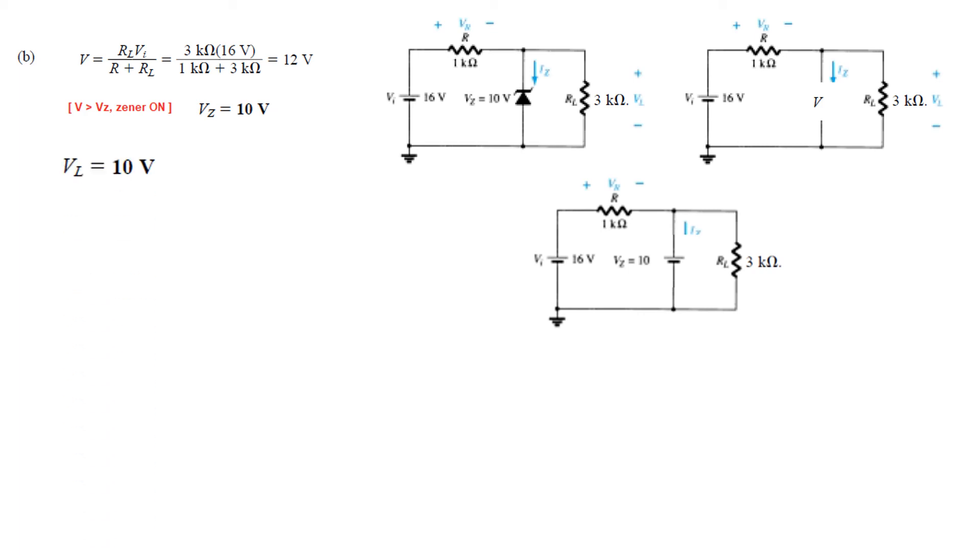And since VZ is 10 volt, therefore VL is also 10 volt. This is 10 volt. This will remain 10 volt. So this is also 10 volt. And now VR is 6 volt.